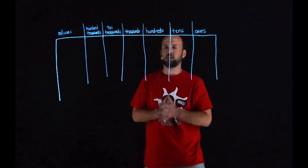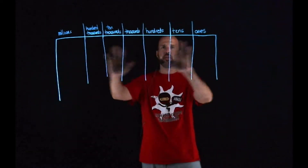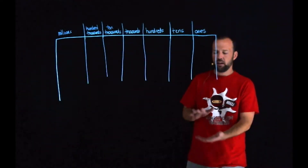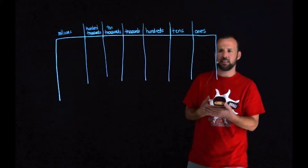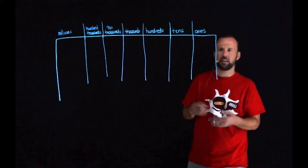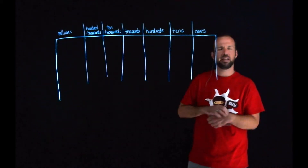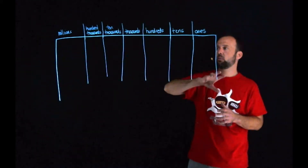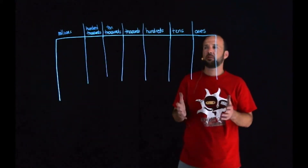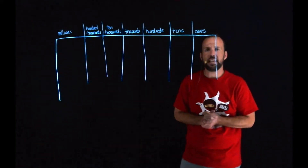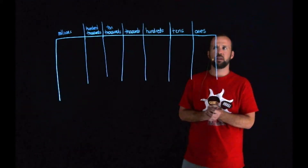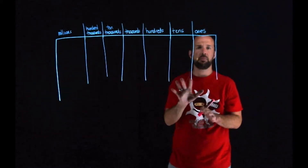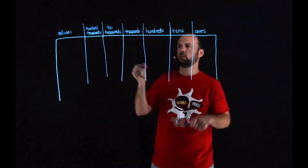So the first thing I'm going to have you do is write a number for me. Make sure you have your blank place value chart ready to go. Today would probably be a good day to put it in that plastic dry erase board thing because we're going to be writing numbers and erasing numbers. But just make sure you have your place value chart ready. So here's your first number: I would like for you to write 1,708 in your place value chart.